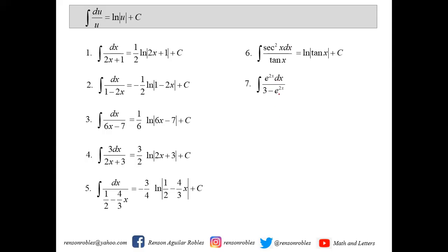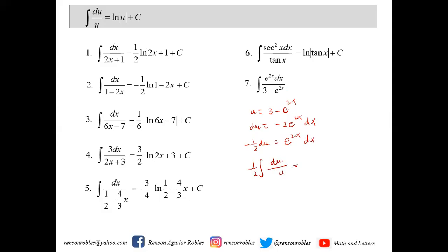Another example: the integral of e^(2x) dx over 3 minus e^(2x). We let u equal 3 minus e^(2x), and du equals negative 2·e^(2x) dx. We multiply by negative one-half so that negative one-half du equals e^(2x) dx. This becomes negative one-half times the integral of du over u, giving negative one-half ln(u) plus c. Replacing u: negative one-half ln(3 − e^(2x)) plus c.